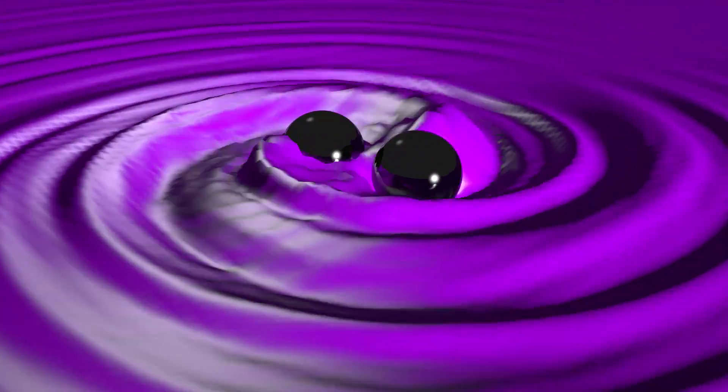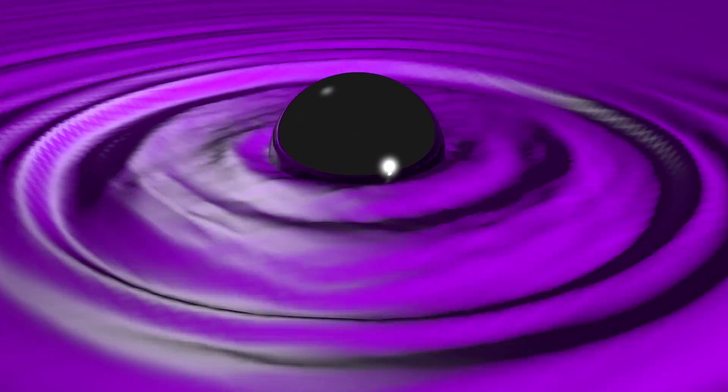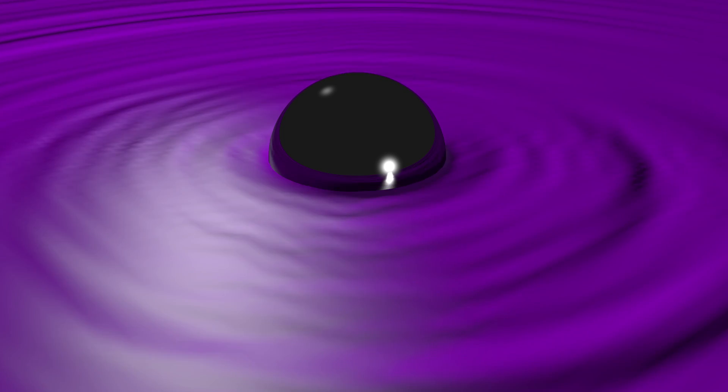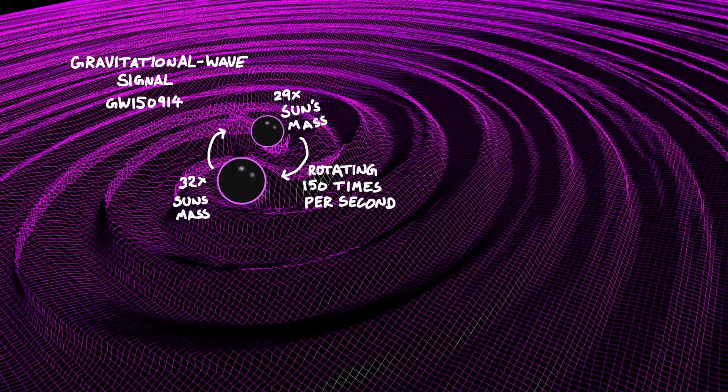And when they merged, they formed a new black hole that rang kind of like a bell, throwing out colossal amounts of energy as gravitational waves, until it settled into a perfect sphere. And all of this happened in 0.2 seconds.